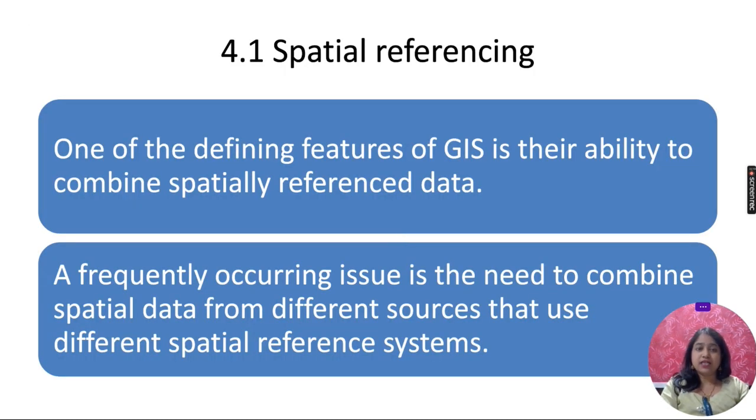Spatial referencing is one of the defining features of GIS and their ability to combine spatially referenced data. A frequently occurring issue is the need to combine spatial data from different sources that use different spatial referencing systems. Different countries are doing their own study and have already collected spatial data stored in datasets. If we have to combine data, we may need to combine data from different sources.